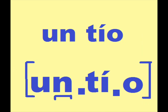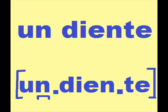The N can also become dental. It's usually alveolar, but if N comes before a T or a D, it becomes dental. For example, in un tío, that little mark under the N shows it's a dental N, because the T that comes after it is dental. Similarly, in un diente, the D is dental, so the N becomes dental due to assimilation.